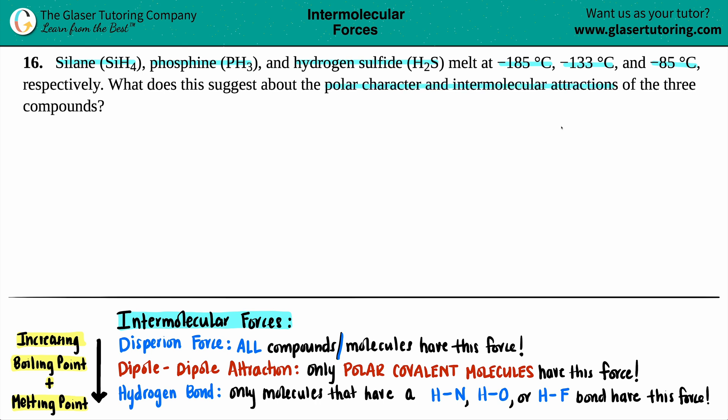Alright, so let's just list these out. We have silane, which is SiH4, we have phosphine, which is PH3, and we have hydrogen sulfide, which is H2S. Let's bring these out a little bit more.